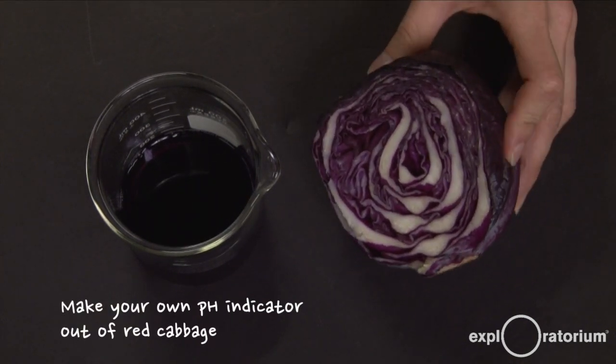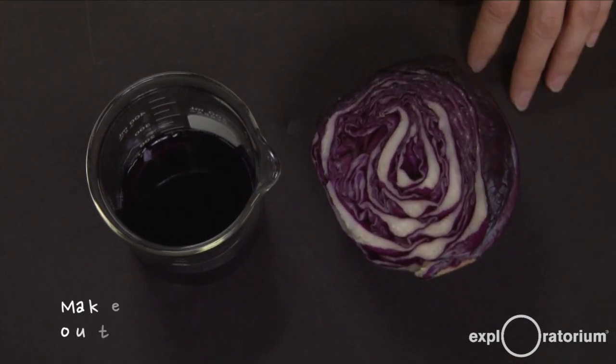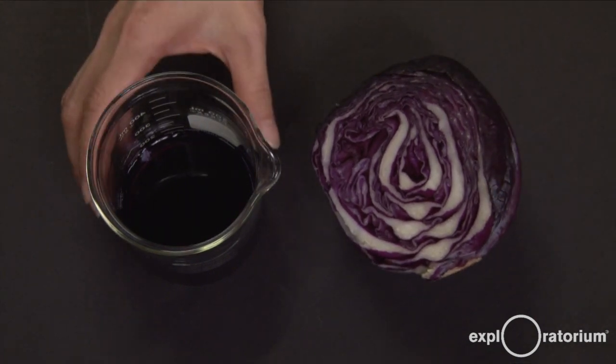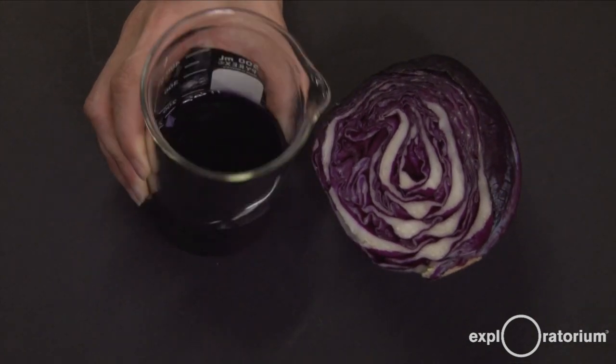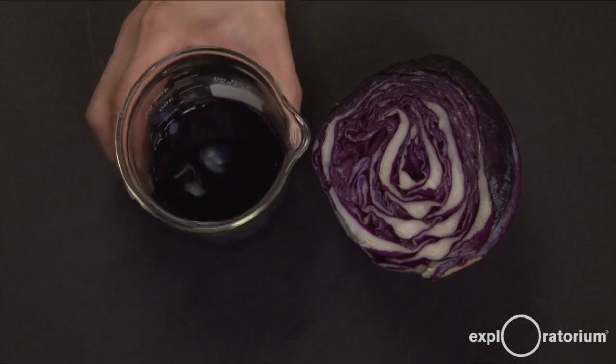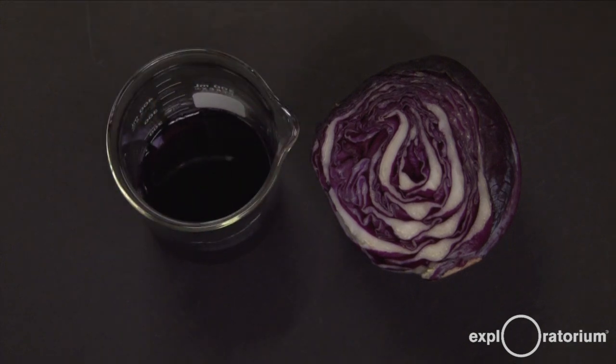You take the cabbage and chop it up into bits and poach it in really hot water like you're making cabbage tea. Or you can mix it up in a blender. Once you strain out the cabbage bits, you have this nice, deep purple cabbage juice indicator.